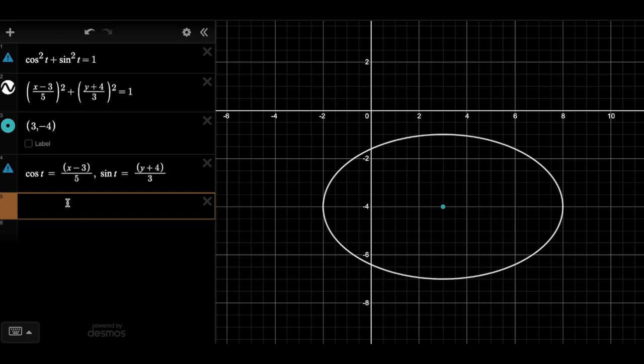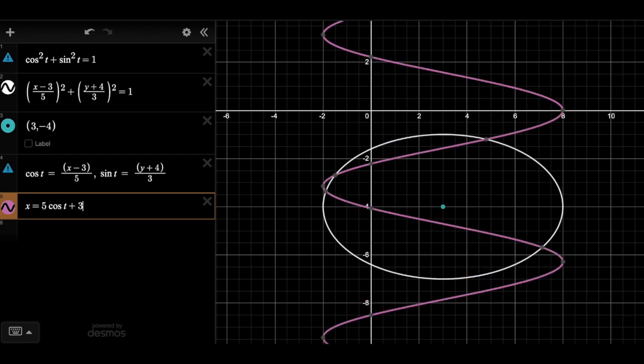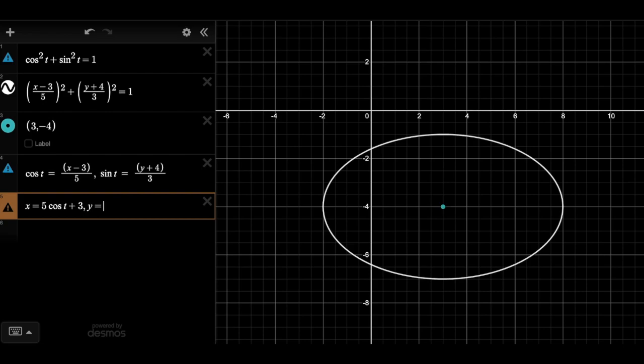And then if I solve for x and y, we see that x is equal to five cosine t plus three. And y is equal to three sine t minus four.